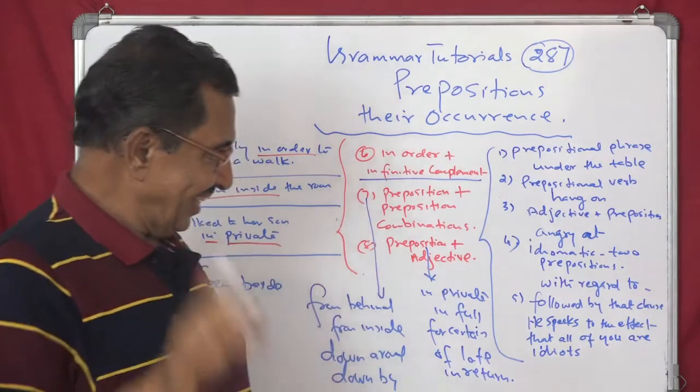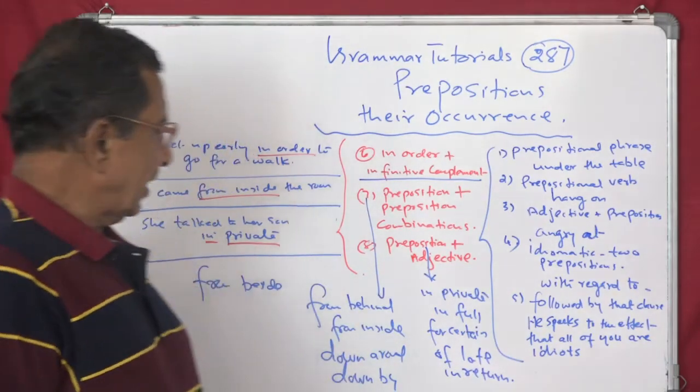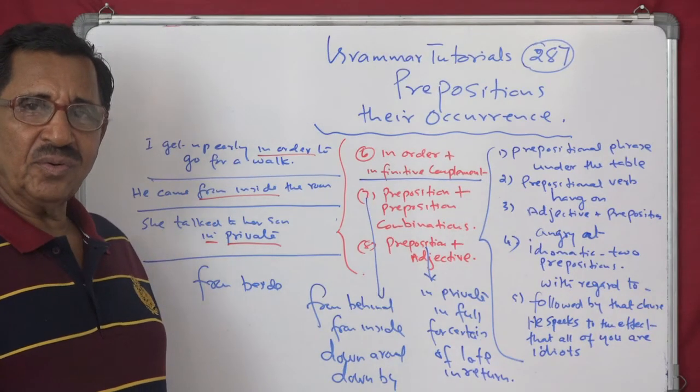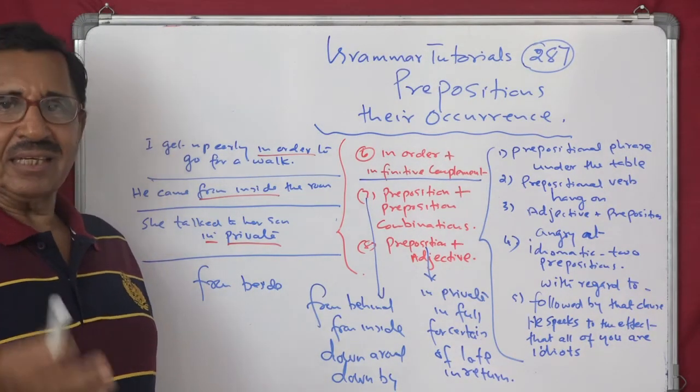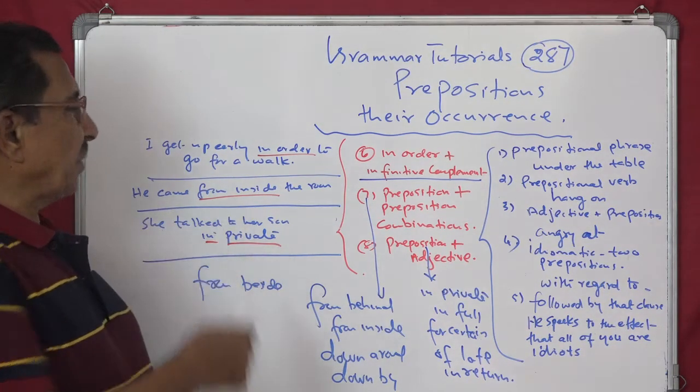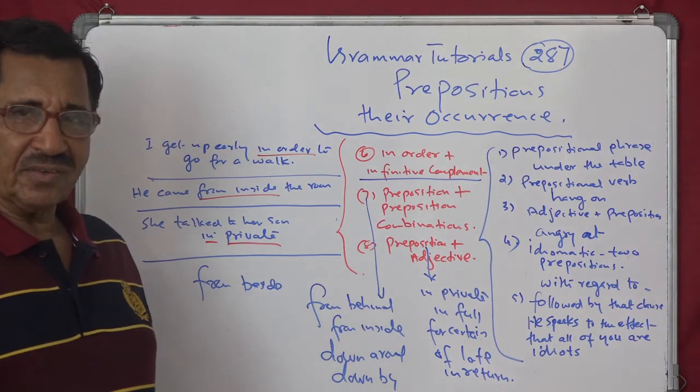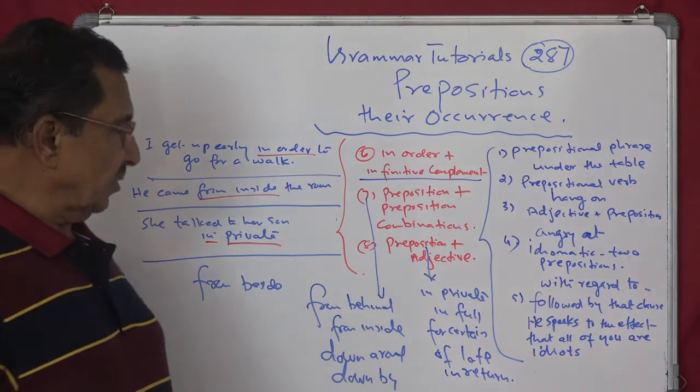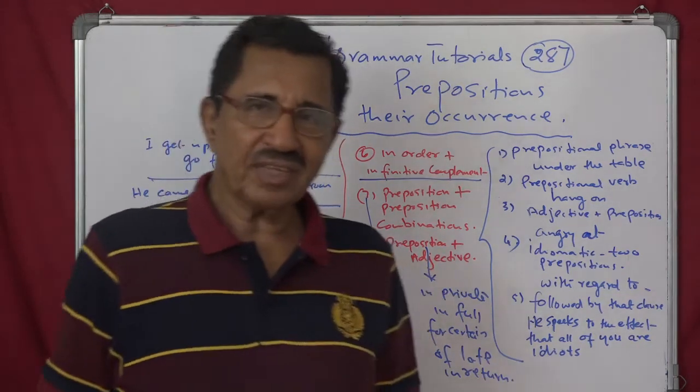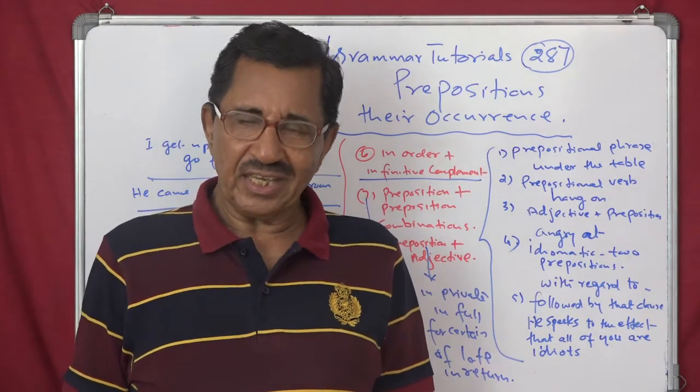Followed by that clause, we have seen that. And now you saw, in order, in order can be omitted. He came in order to kiss me. He came in order to kiss me, or talk to me. Then he came from inside. It is two prepositions, preposition plus preposition. You have got other examples I told you, from behind and so on. And then last one is, preposition with adjective, in private, in full, for certain, of late and so on.